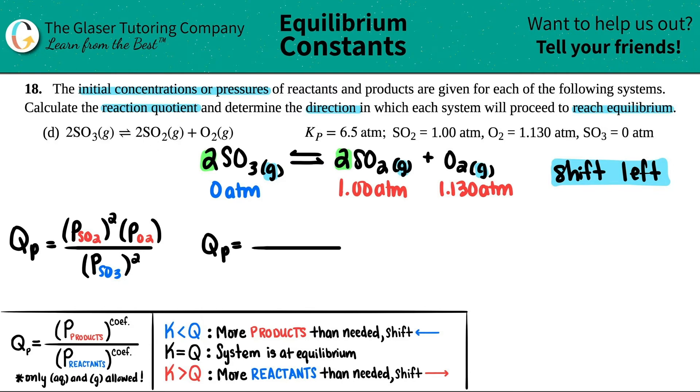So Qp equals products over reactants. Let's see, the SO2 was 1.00 atm and that was raised to the second, times 1.130, close that up. And then this would be divided by zero, and that's technically squared, right?